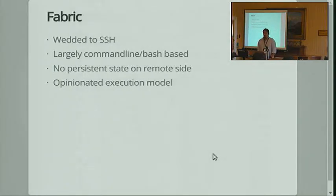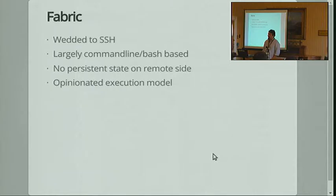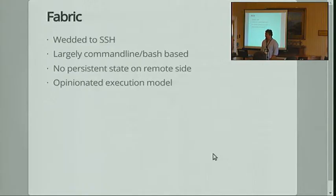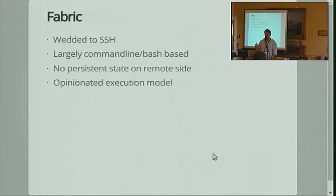Fabric compared to Chopsticks: it's wedded to SSH, so it will never do the stuff that Chopsticks can do with Docker. It relies on that ability to create multiple channels that SSH provides. There's no persistent state on the remote side — every script has to return a value and the orchestration host drives it. With Chopsticks, Fabric has a framework that allows you to drive these things, whereas Chopsticks is just a library that will let you do stuff in parallel — you can do whatever you want.